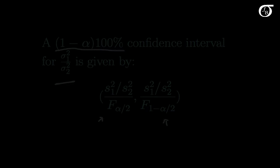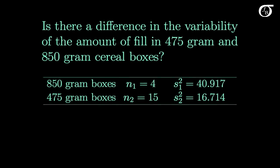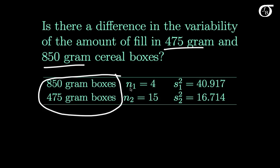Now let's work through an example. Is there a difference in the variability of the amount of fill in 475 gram and 850 gram cereal boxes? The 475 gram and 850 gram is what's listed on the boxes, but there is some variability in the actual amount of cereal in these boxes. I investigated this on two sizes of my favorite breakfast cereal — this is real data. I got samples of these two types of boxes: 4 of the 850 gram boxes and 15 of the 475 gram boxes.